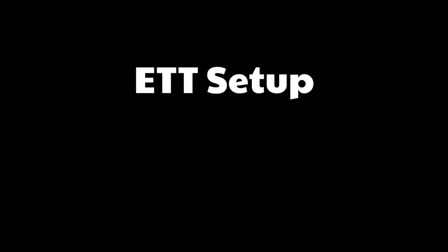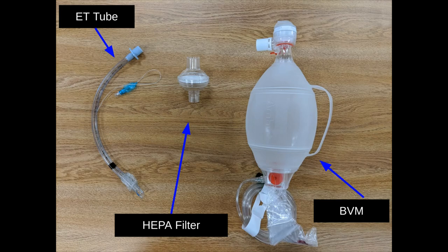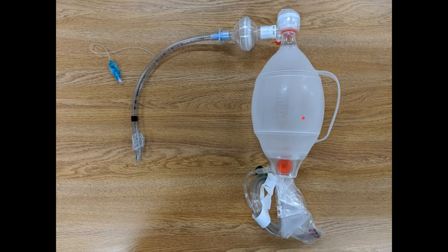Lastly, if we need to perform endotracheal intubation, the setup looks like: endotracheal tube, the HEPA filter, and the bag valve mask. This is what it looks like all put together. In this case, the viral filter goes in between the endotracheal tube and the bag valve mask itself.